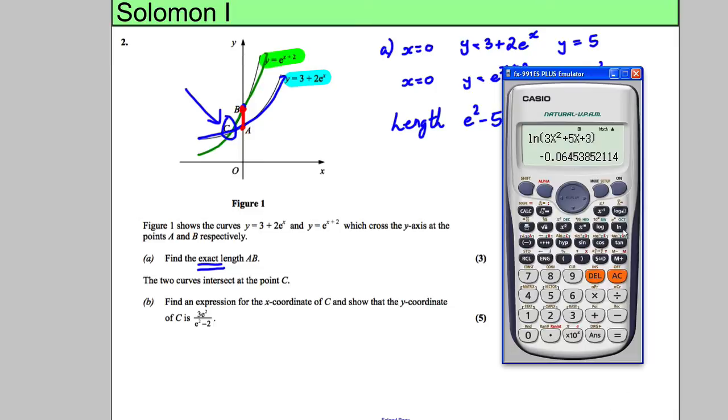Now just to double check that's actually a positive number, that is worthwhile doing. Don't write this down but e^2 take away 5 actually is a positive number which you'd expect because you'd want it to be positive. You'd want it to be a length so obviously it couldn't be a negative answer so that gives you some comfort it's the right answer.